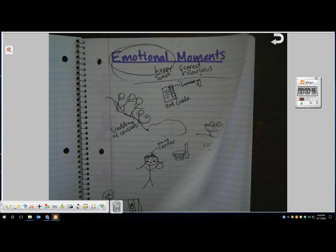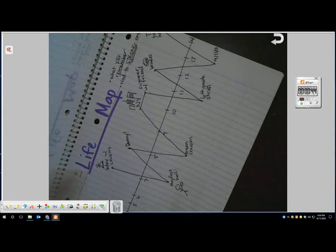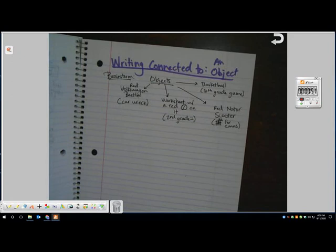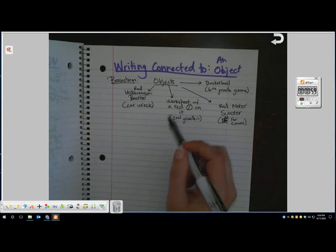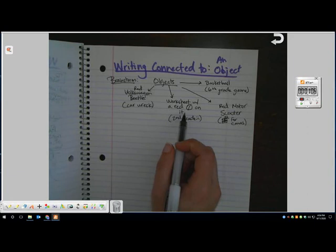So then I picked out some things from my life map and from my emotional moments, and I thought, which one of these have objects tied really strong to them? When I was brainstorming, I spent about two or three minutes. I'd recommend getting four to ten different objects on here tied to memories. I did my red Volkswagen Beetle, which was a car wreck. Another object was a worksheet that I got a big old fat red zero on it in second grade with my evil teacher, Miss Kendra.